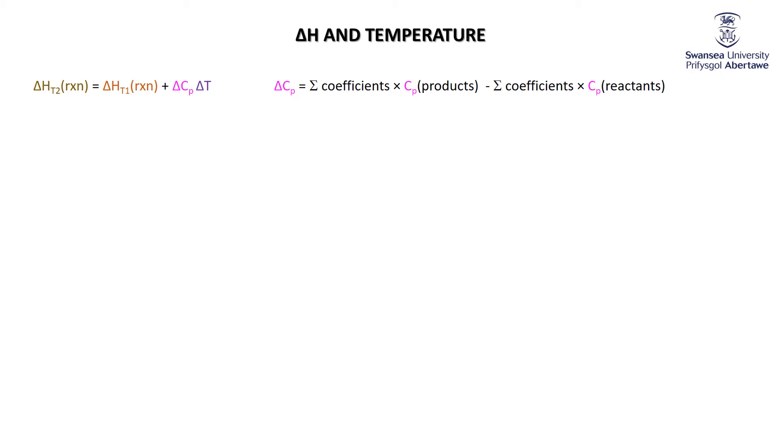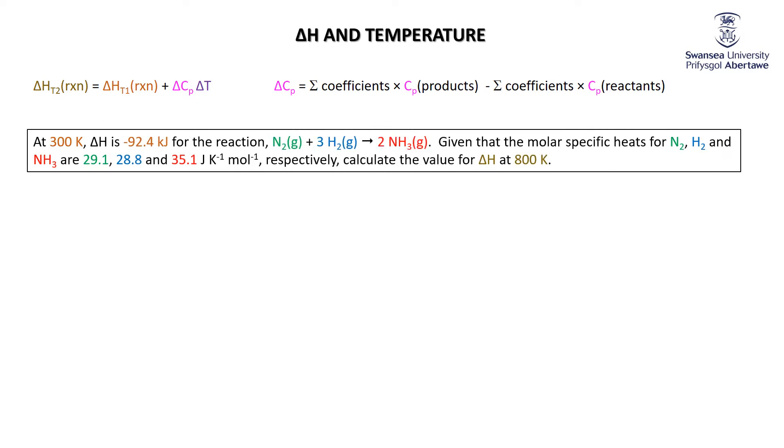Finally, in this little sequence, let's do a calculation associated with the application of Kirchhoff's equation. There's the definition of CP, a rather long definition. Much easier just to say that we'll add up the CPs of the products, add up the CPs of reactants, and subtract the two. So at 300 Kelvin, delta H...